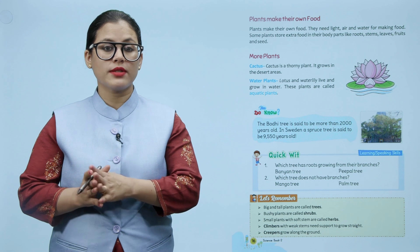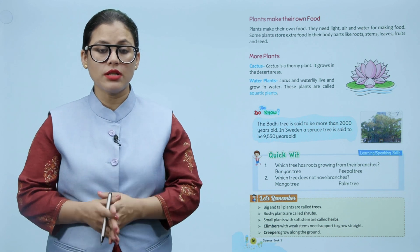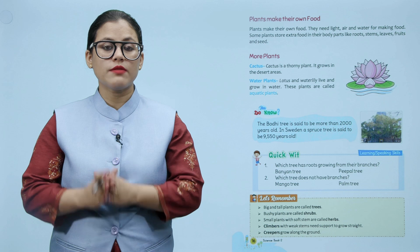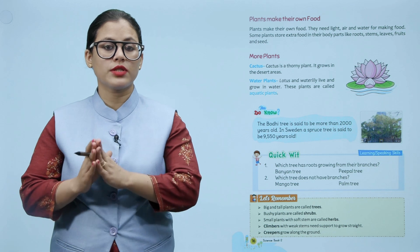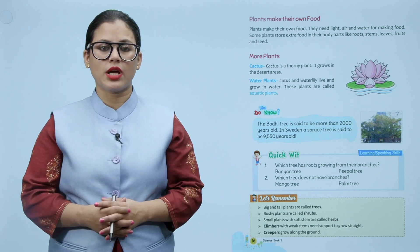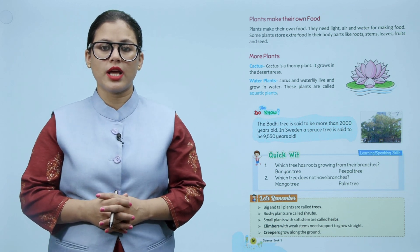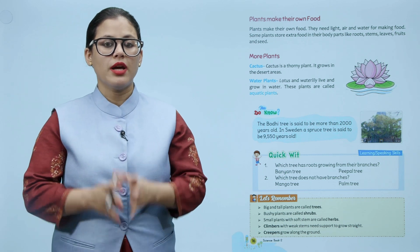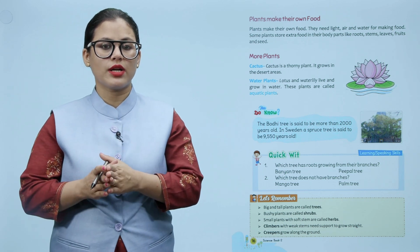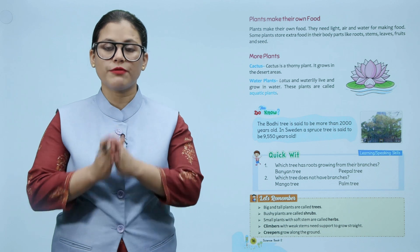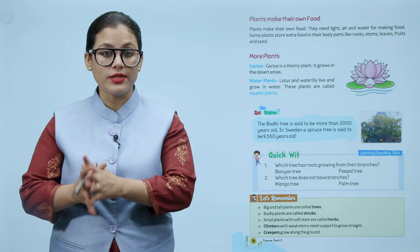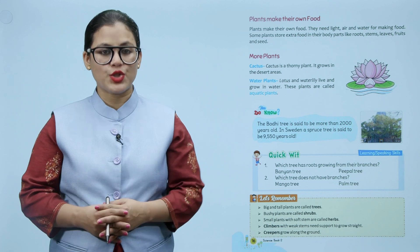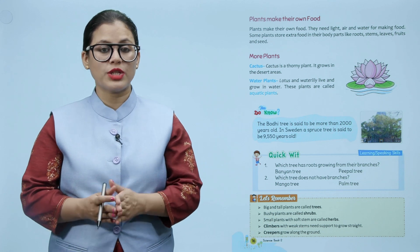Do you know? The Bodhi tree is said to be more than 2000 years old. In Sweden, a spruce tree is said to be 9550 years old. Jo Bodhi tree hai, aisa maana jaata hai ki woh 2000 saal se bhi upar ka hai. Aise hi Sweden mein ek spruce tree hai jo ki 9550 years old hai.